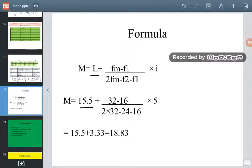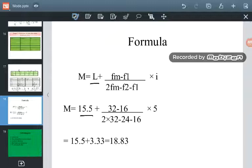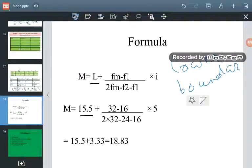So the formula of the mode is M equals L plus fm minus f1 over 2fm minus f2 minus f1 times i. What is M? M is the mode. What is L? L is the lower boundary of the modal class, the class containing the largest frequency. That is represented by L.